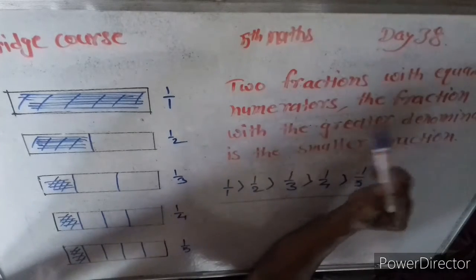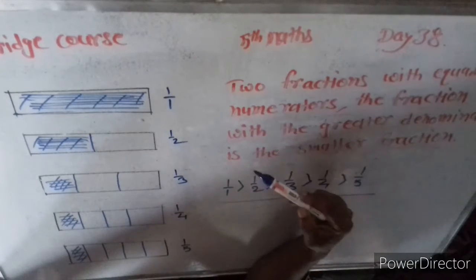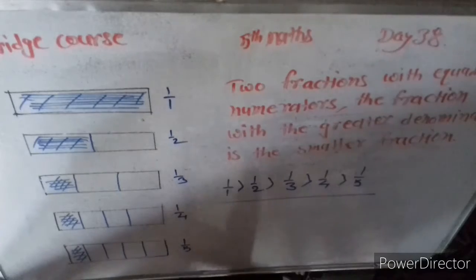Two fractions with equal numerators, the fraction with the greater denominator is the smaller fraction.